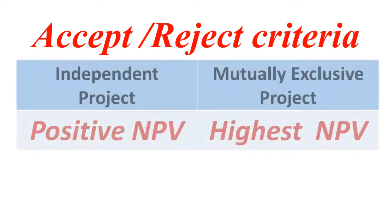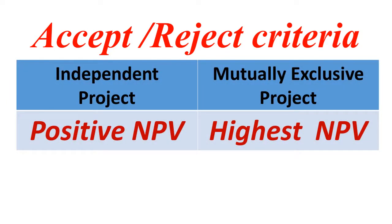We will now understand the accept and reject criterion. We will find two types of projects: one is an independent project, another one is a mutually exclusive project. In case of an independent project, one project will be there and we need to decide whether to accept or reject. If the project NPV is positive, then it will be accepted; if it is negative, it will be rejected straight away.